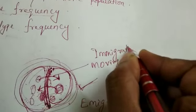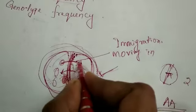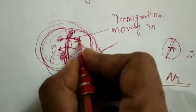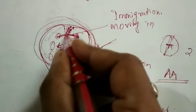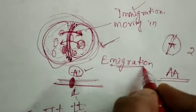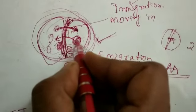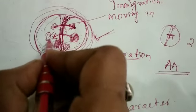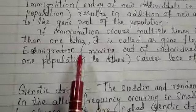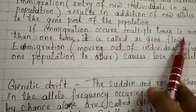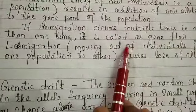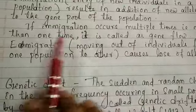If immigration occurs, new individuals entering bring a new set of genes, so new alleles are added to the population. Whereas emigration results in loss of some genes, as the leaving individual takes its genes away. If constant immigration takes place — migration occurring multiple times — then it is called gene flow: more and more genes being added to a population due to immigration.